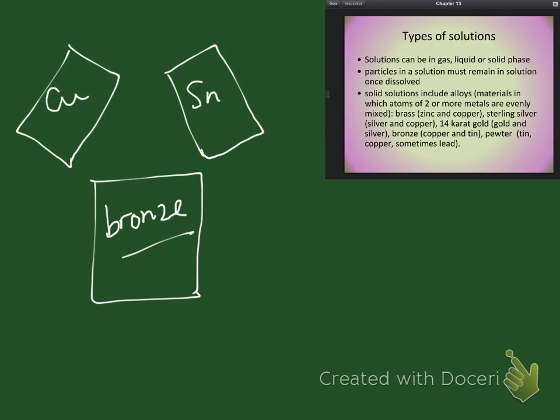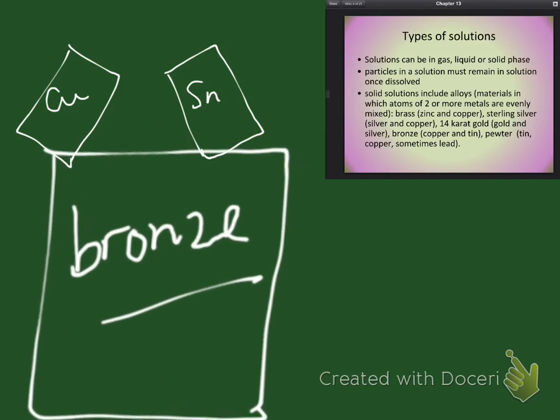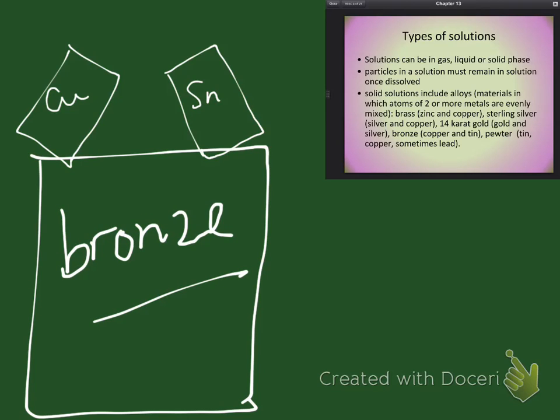However, if you melt copper and you melt tin and you mix them together, you can actually forge something. And this is bronze. It's bronze. And bronze is hard enough to do some things that neither copper nor tin can. So, in a sample of bronze, you actually have copper and tin atoms all mixed together. You have a mixture of copper and tin atoms.